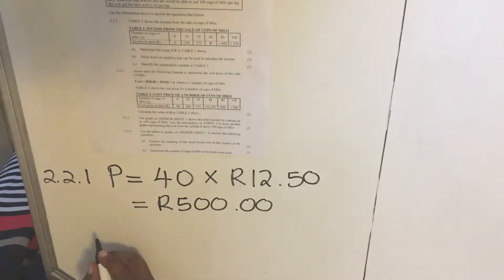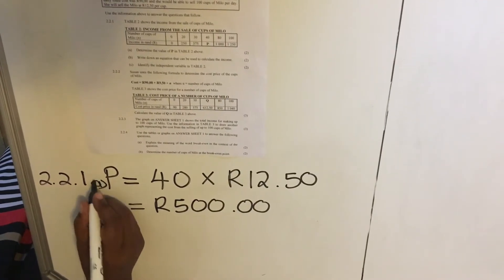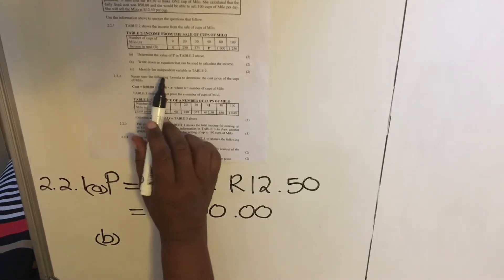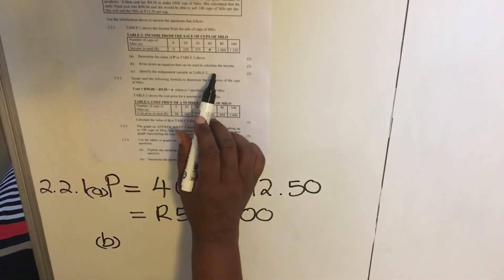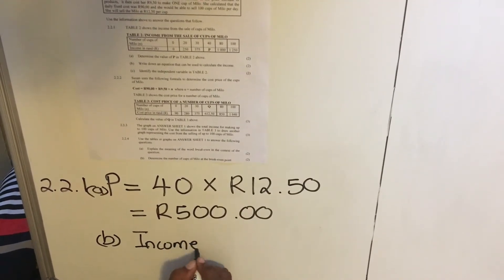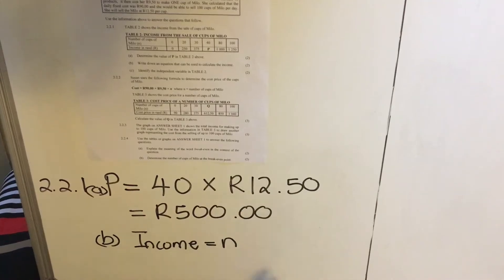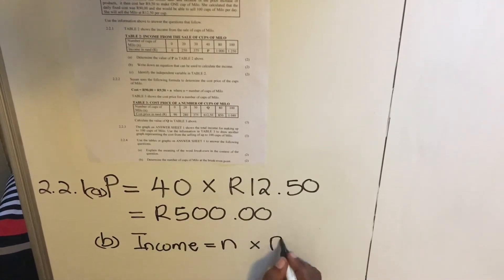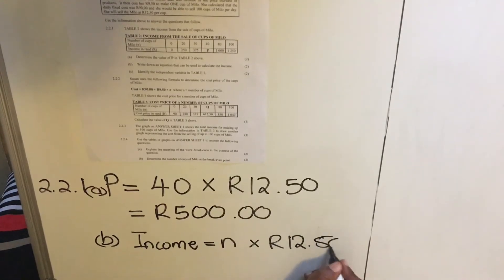Let's look at B. Okay. There was number A, 2.1 A. This is B. So it says, write down the equation that can be used to calculate the income. The income can be calculated by the number of cups, whatever number of cups that you'll be selling. In this question, it was 40. And then you multiply it by 12.50. You'll get your income.